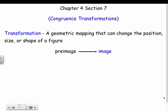We're going to be working with some of our transformations that we've learned in the past, and in this case they're going to be congruence transformations because we're in triangle congruence right now. A transformation is a geometric mapping that can change the position, size, or shape of the figure. In this case today we're not so concerned with changing the size of the shape - we want it to stay the same for a congruence transformation.